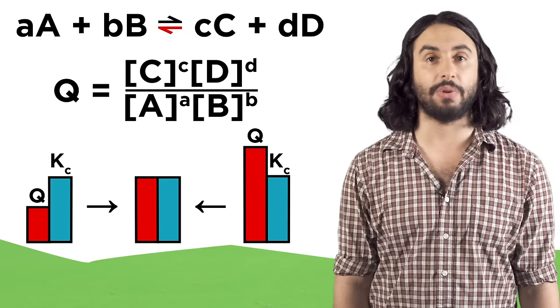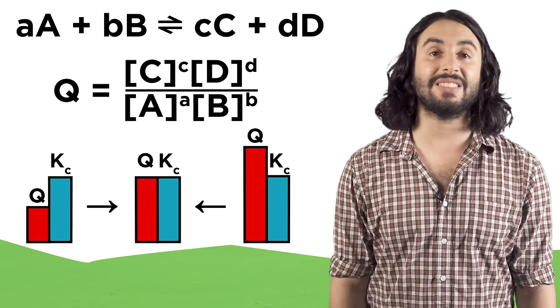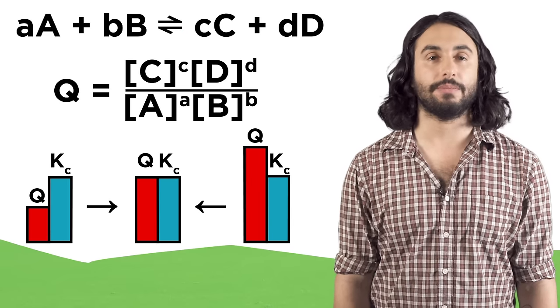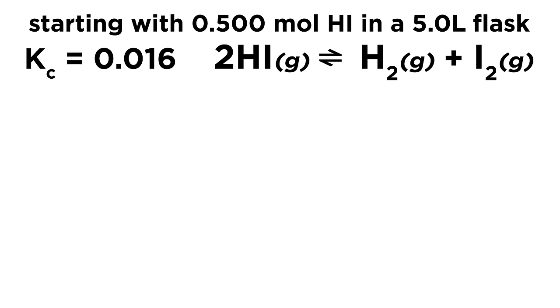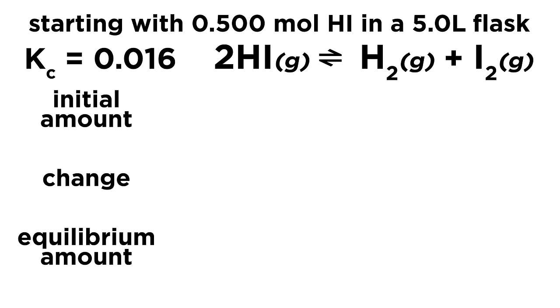Let's try a more difficult ICE box. Given the following information, calculate the equilibrium concentrations of each substance in terms of molarity. Remember that molarity is moles per liter. So we set up our ICE box and calculate the concentration of our reactant—that'll be the initial value—and zero for the products. Now here, the change will be different for each substance because of the stoichiometry.